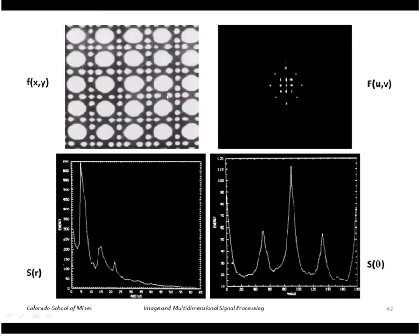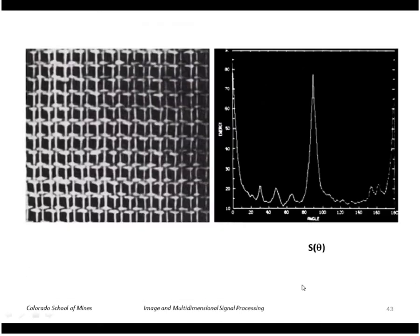And one more example, an image here, its Fourier spectra shown here. This is the spectrum as a function of the radius and the spectrum as a function of the angle theta. One more image with its texture and its spectrum as a function of theta.